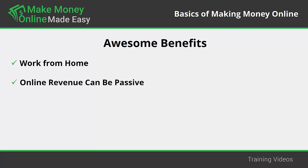Online revenue can be passive — you don't have to put in constant work to see results. Writers can post an article once and get paid for the rest of their lives. Bloggers can get paid through advertising revenue, generating passive revenue that means you don't have to work for your money. You could pay for a vacation, send your kids to college, or retire early thanks to this new revenue source.